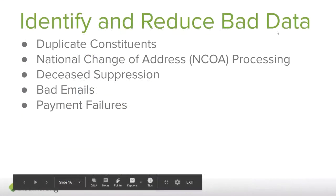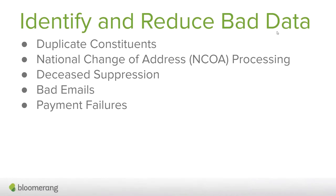Now let's look at how you can identify and reduce bad data within your database. We'll jump into the database to look at these built-in tools in Bloomerang: duplicate constituents, NCOA processing, deceased suppression, bad emails, and payment failures. These are built-in tools in Bloomerang that are free for standard customers — you don't need to pay anything extra. Some require activation to start working, while others work automatically.